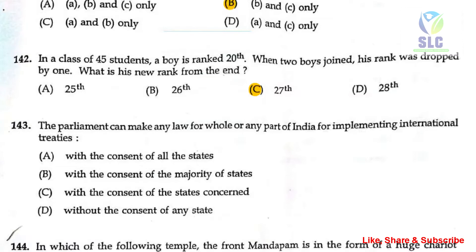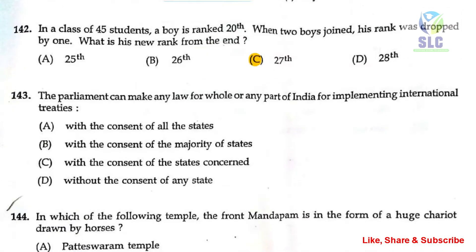The next question: the Parliament can make any law for the whole or any part of India for implementing international treaties. The answer for this question is without the consent of any state — option D is the correct answer.